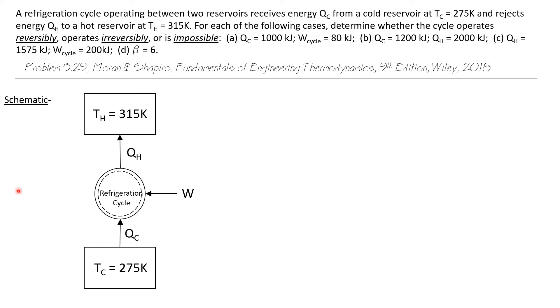Let's look at a schematic of this refrigeration cycle. A refrigeration cycle requires work to be input to the cycle, and that causes heat transfer from the cold reservoir into the refrigeration cycle, which then rejects heat into the high temperature reservoir. In this case, the hot reservoir is 315K and the cold reservoir is 275K.